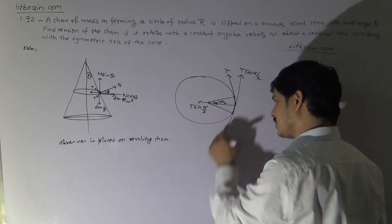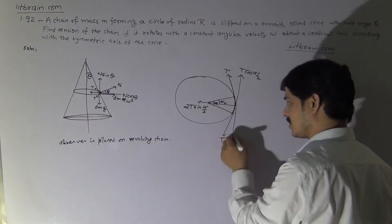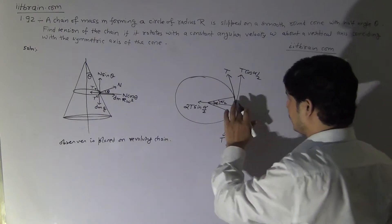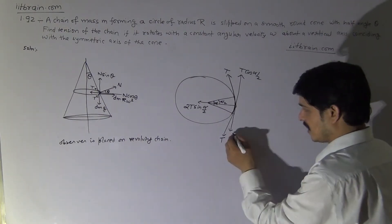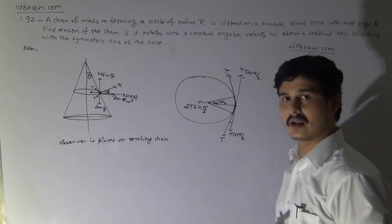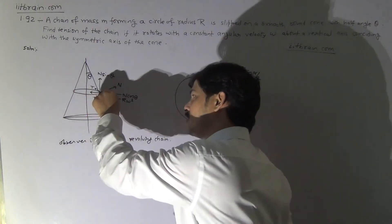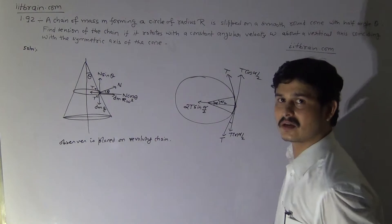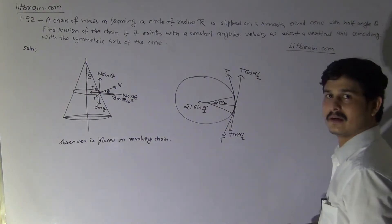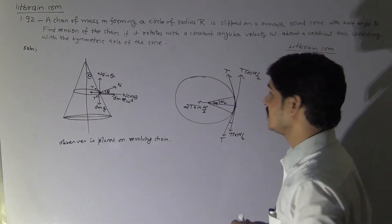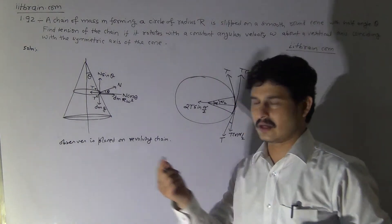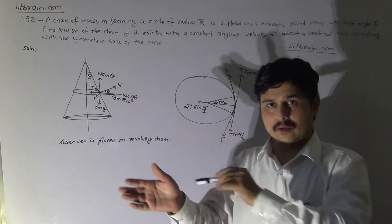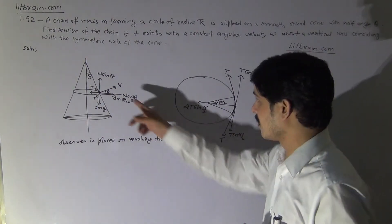From both ends of the small segment there are two tension components. The tangential components T cos(α/2) from each side cancel each other. The inward components 2T sin(α/2) point toward the center as shown in the diagram. So the net inward force due to tension on the small segment is 2T sin(α/2).